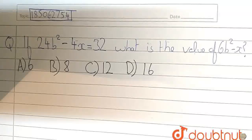So this is our question. Here we are told that if 24b² - 4x = 32, what is the value of 6b² - x?